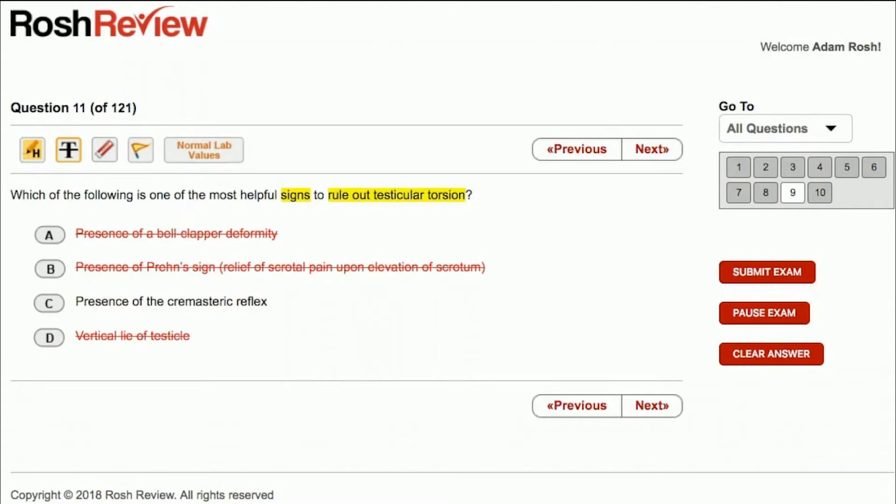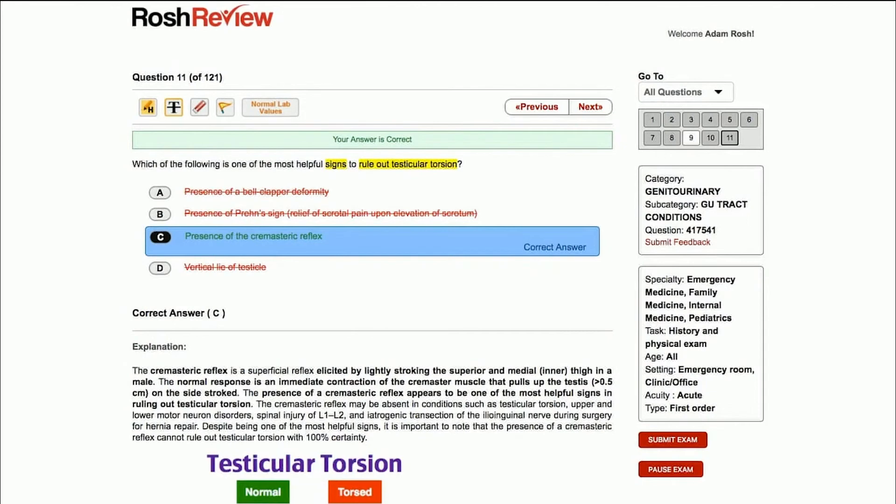So if there is a cremasteric reflex, it is unlikely that there is testicular torsion. However, and I want to make this clear, you can still have testicular torsion in the presence of a cremasteric reflex in a true clinical setting. So let's try this. Answer choice C. And sure enough, that is correct. The presence of a cremasteric reflex is a helpful sign to rule out testicular torsion.